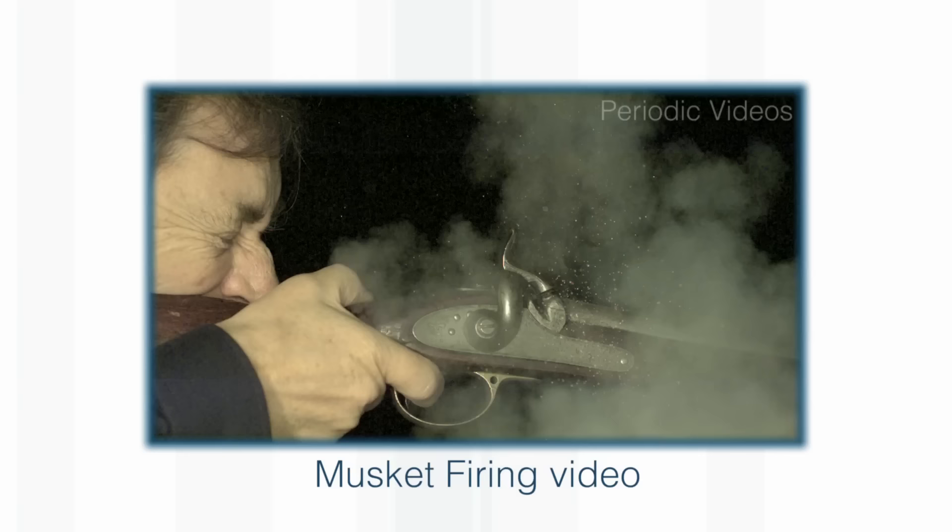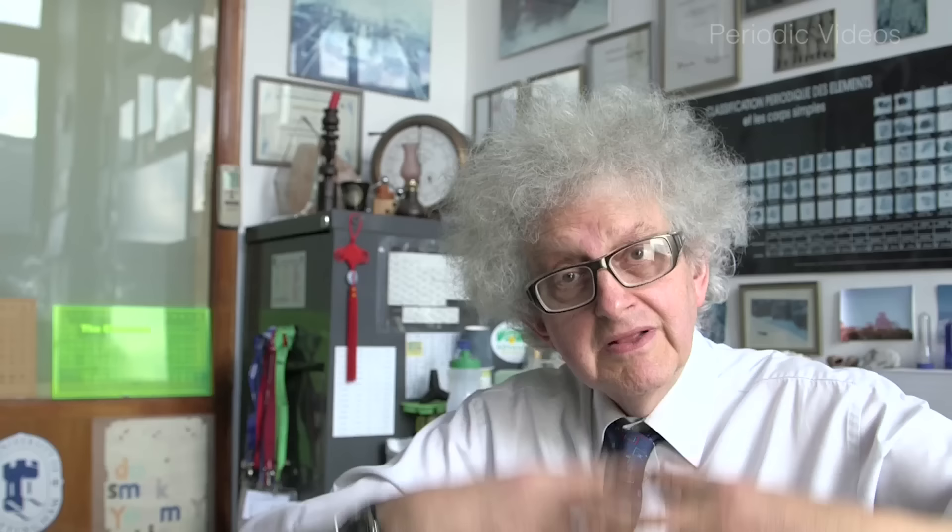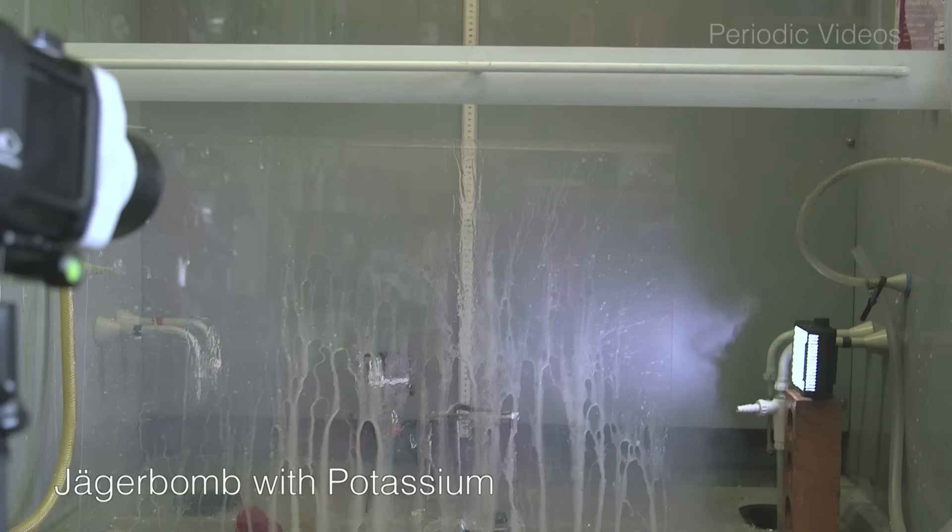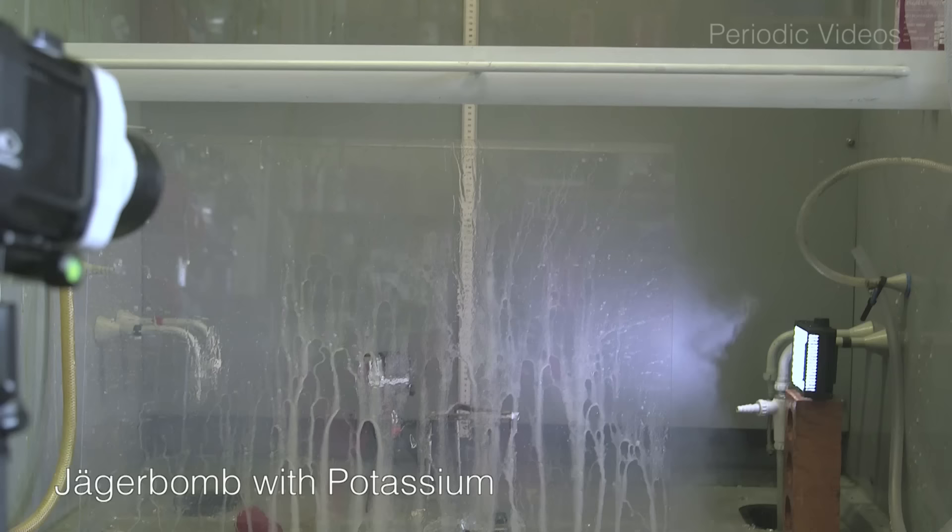This couldn't possibly have happened because the reaction with alkali metals and water is a very violent and quick one. Whereas if you want to project something like a bullet from a gun, you need a much slower, steady reaction, where there's a buildup of gas that pushes the thing out. So the first Jägerbomb with potassium dropped in. There was an enormous bang and the beaker was gone.